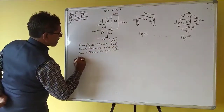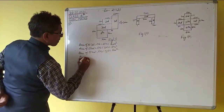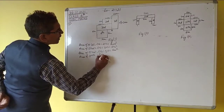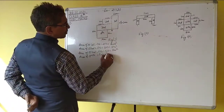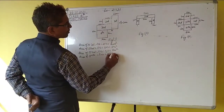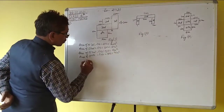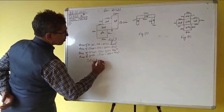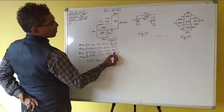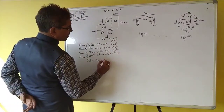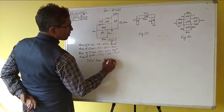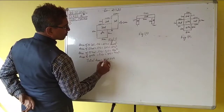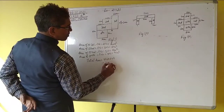Now, area of rectangle fourth is equal to length into breadth, 3 into 3, which equals 9 cm square. Total area is equal to 8 plus 6 plus 5 plus 9, which is equal to 28 cm square.